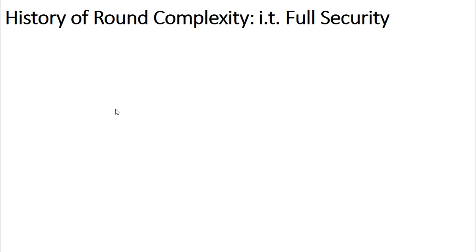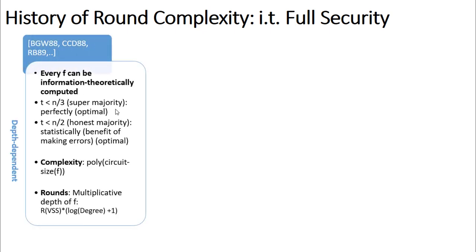There is a huge body of work on round complexity history, so let me touch upon the milestones. In 1988, BGW and CCD proved a landmark result that every function can be computed perfectly with less than one-third corruption. Subsequently, RB89 showed that one-half corruption is enough to attain statistically secure MPC, demonstrating the benefit of making errors. Both these bounds are optimal. The complexity of these protocols relates to the size and depth of the circuit of the function, where the latter is tied to the degree of the function.